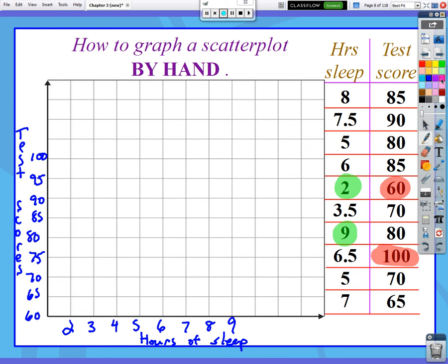All right, so now we're just going to graph these like they're points, x, y coordinate points. So for eight hours of sleep, here's eight hours of sleep, I need to go up to a score of 85. And there's that student. Now, does it matter if this is the first student in this list of data? And do I need to label him as being the first student? No, I'm just going to graph these points. So then seven and a half would be right in here with a score of 90. So there's the second student.